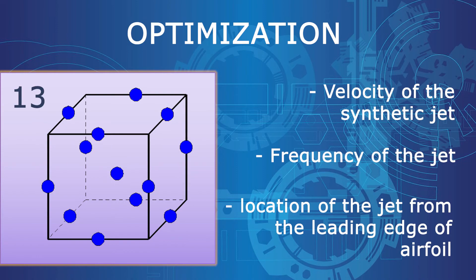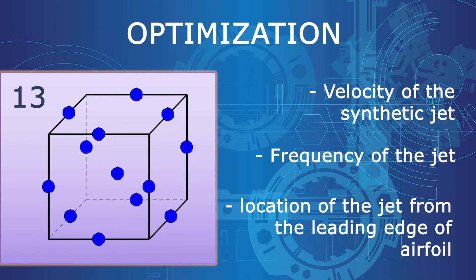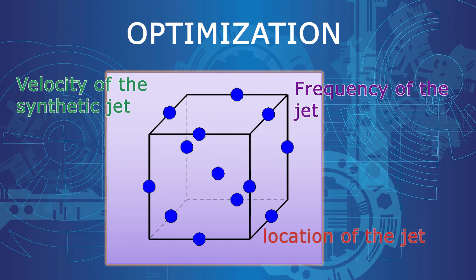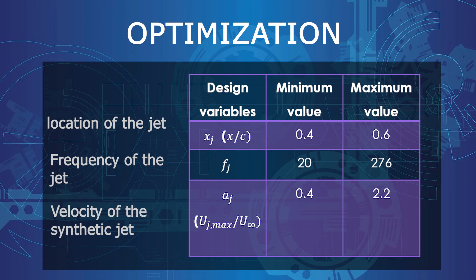A total of 13 simulations were required to create the dataset. In this schematic diagram, blue spheres represent the extremities of the constraints. The location of the synthetic jet was selected from 40 to 60% of the chord length, the frequency of the jet was limited from 20 to 276 Hz, and the actuation velocity was limited from 0.4 to 2.2 times the inlet velocity. These limits were considered based on past research, and the design variables are non-dimensionalized.